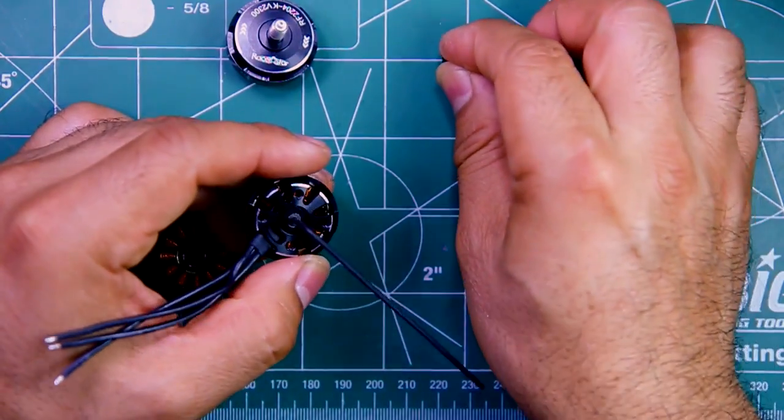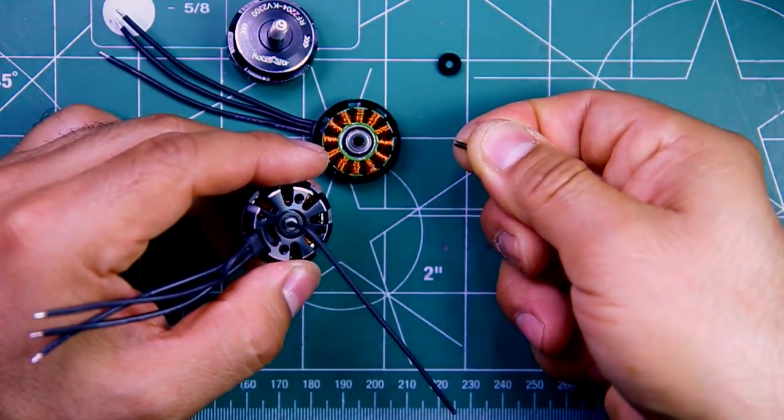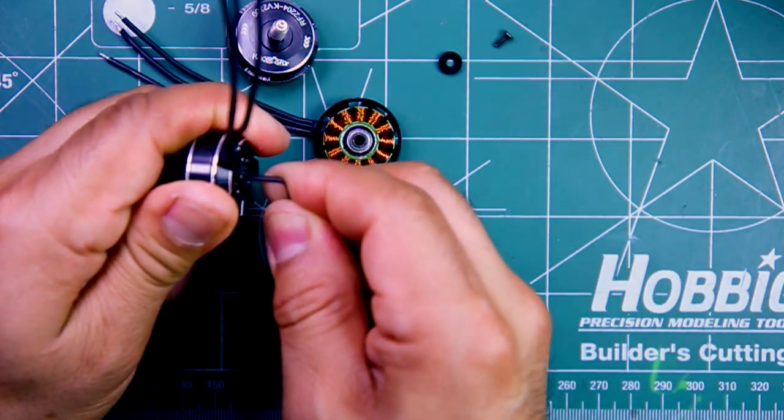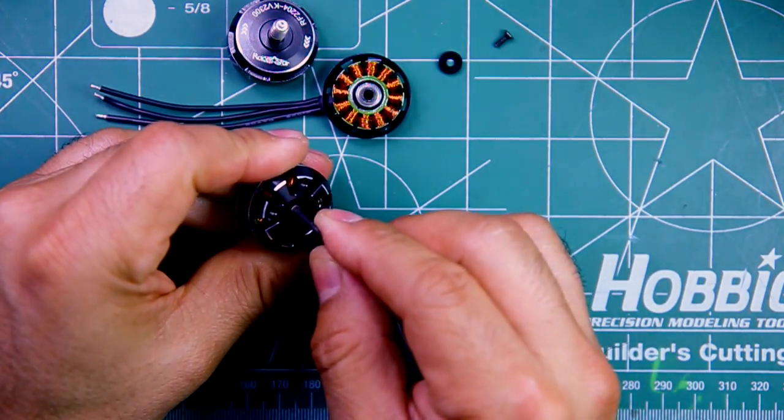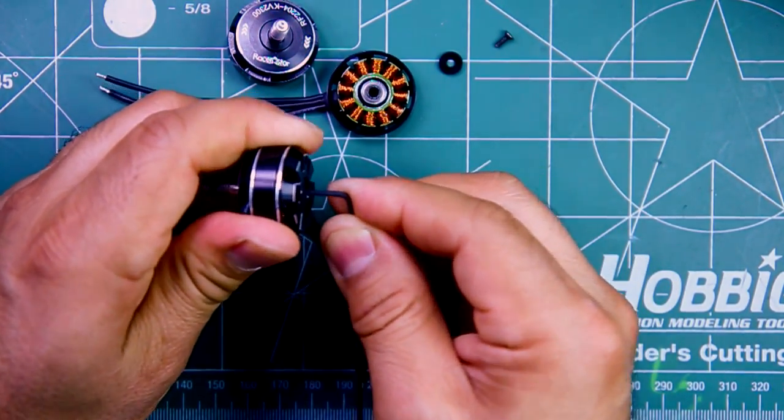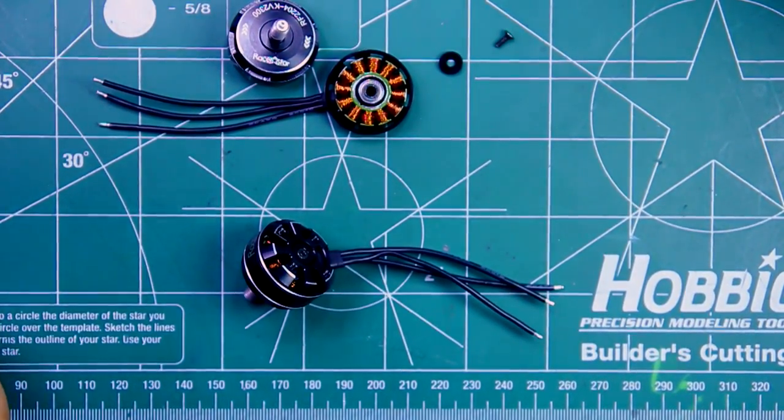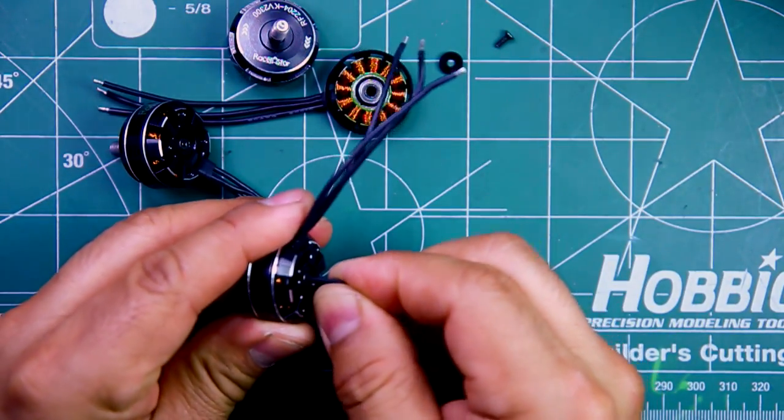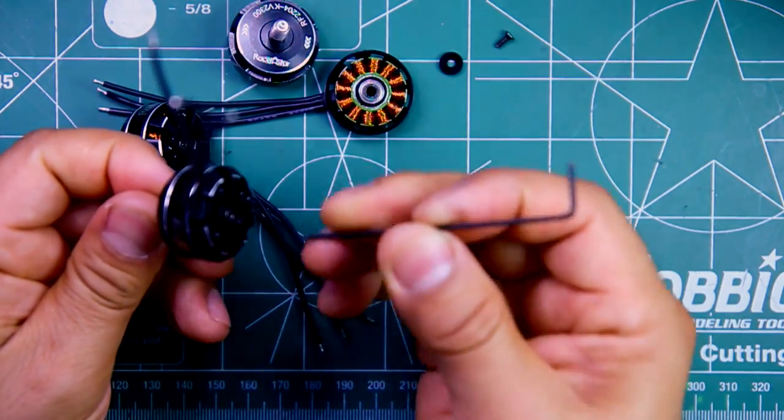So, it does seem that it was that one motor, they forgot to add Loctite or thread lock on that one because this one's on there pretty good, it's much harder to turn. Yeah, that's on pretty good, so that has Loctite. So I got the one motor where they forgot to add Loctite, so that was kind of strange. Oh, see that one? Oh, that one's pretty loose.